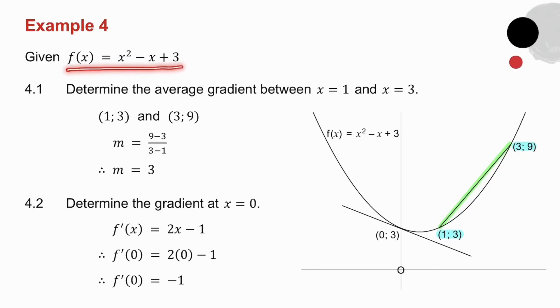So I take the derivative of f of x, and I get 2x minus 1. Now I want the gradient when x is 0. So in place of x goes 0. So it's 2 times 0 minus 1. So the gradient of the tangent at x equals 0 is minus 1.